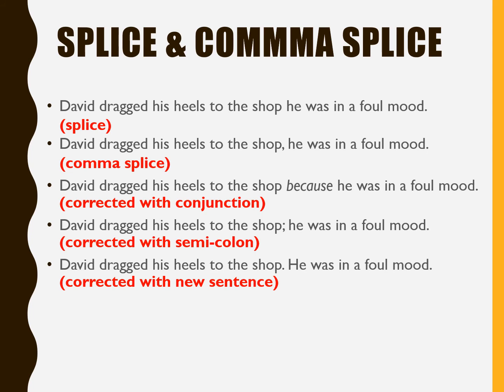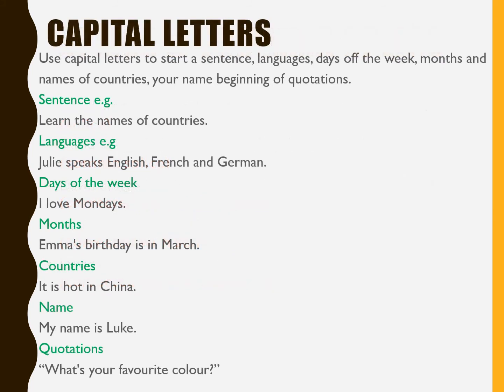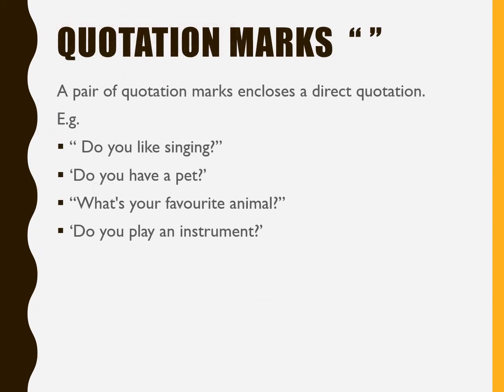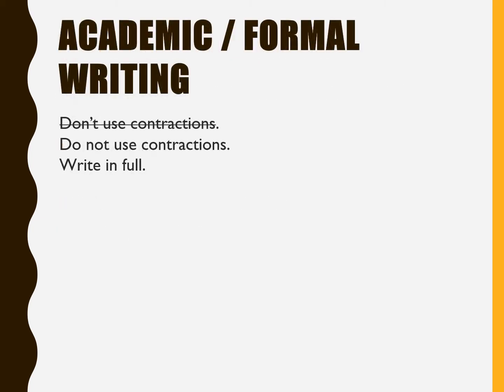Capital letters may seem obvious, but remember the rules, and note which abbreviations you can use. For quotation marks, single or double both work. Most importantly, in academic or formal writing do not use contractions — write in full. So instead of 'don't,' 'I'm,' or 'can't,' write them out completely.